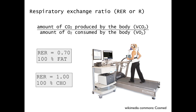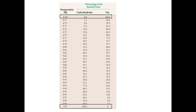When we see an RER of 0.7, this tells us that the person is using 100% fat to produce ATP. Whereas if we see an RER of 1.0, this tells us that the person is using 100% carbohydrate. Numbers anywhere between 0.7 and 1.0 are going to be a mix of fat and carbohydrate, and we can use a chart to determine this.